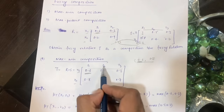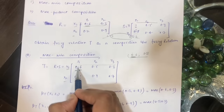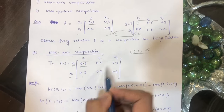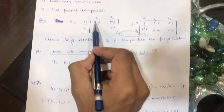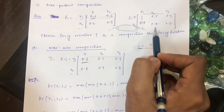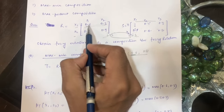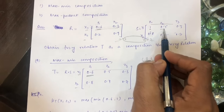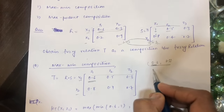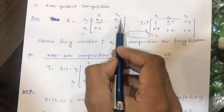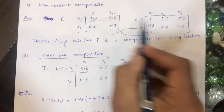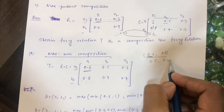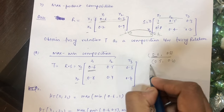For x1, z2 — first row and second column — we take the first row of R and the second column of S. We compute min(0.6, 0.5) = 0.5, then min(0.3, 0.4) = 0.3, and take the maximum of these two values, which is 0.5. So we write 0.5 in that position.